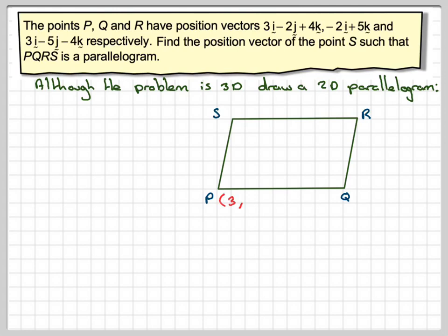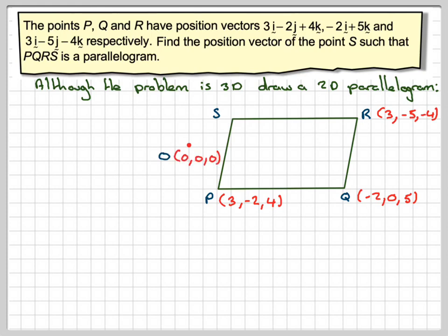I'm going to write down the coordinates of each point because these are position vectors, so the coordinates of P will be (3, −2, 4). For Q it will be (−2, 0, 5) — there's no j component so it's 0. And then R will be (3, −5, −4). We're going to find the position vector of the unknown point S.